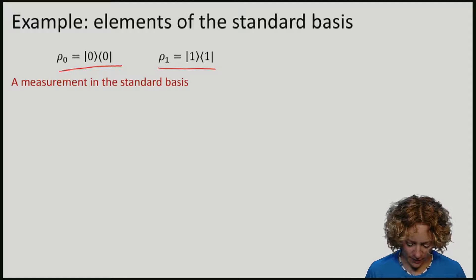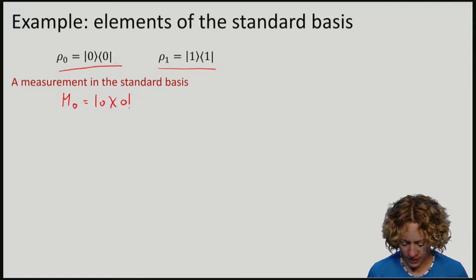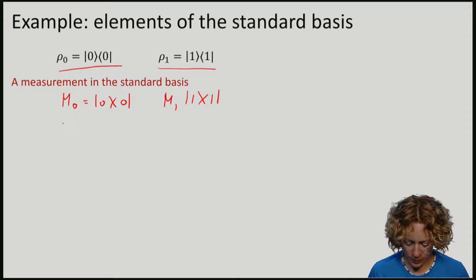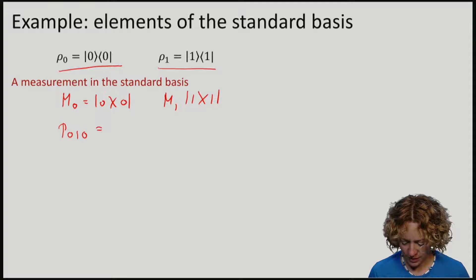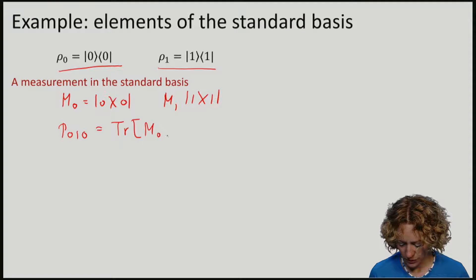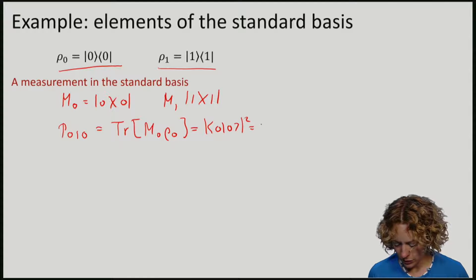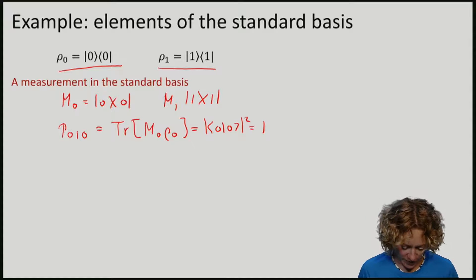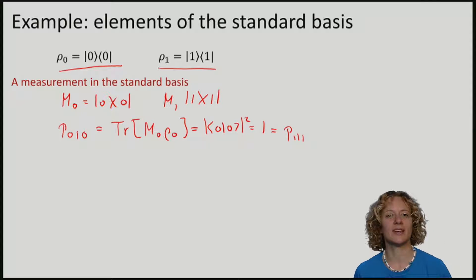If I measure in the standard basis, my measurement operators are M₀ = |0⟩⟨0| and M₁ = |1⟩⟨1|. The probability that I get outcome 0 if the state was actually |0⟩, meaning the trace of M₀ with ρ₀, is equal to 1. The same is true for the |1⟩ state: the probability of getting outcome 1 if the state was |1⟩ is also 1.